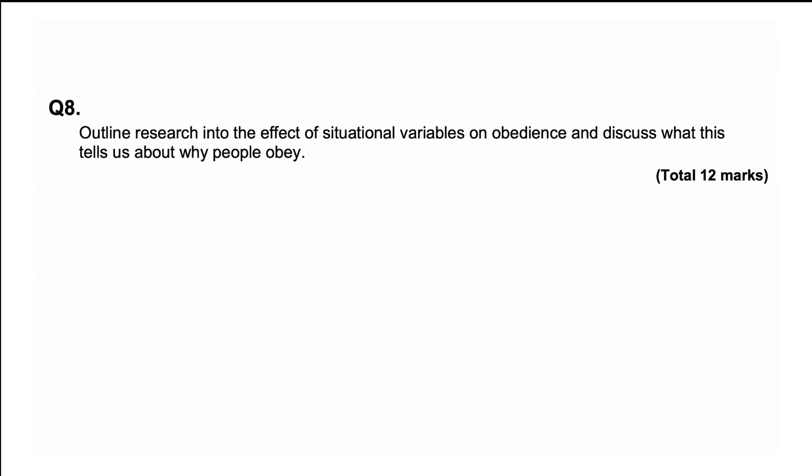Next we have an exam question: 'Outline research into the effect of situational variables on obedience and discuss what this tells us about why people obey' — worth 12 marks. At A-level this would be a 16-marker; if you're doing AS, keep it at 12 marks, and if A-level, bump it up to 16 by adding an extra evaluation. Feel free to pause the video, have a go at writing it out, time yourself, or just plan what you'd include, then continue and I'll go through the mark scheme.